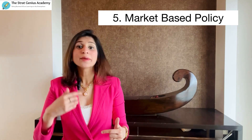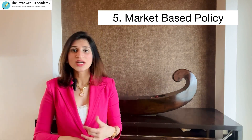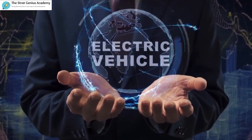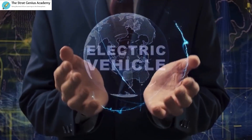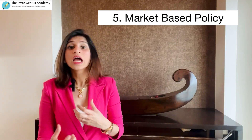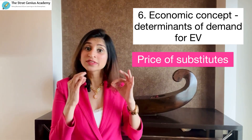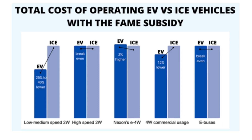Next, mention the market-based policies used by the government, such as conducting information, education, and communication programs — actively spreading awareness about EVs among consumers — and how that can also work to increase the quantity demanded. The last economic theory to mention is the determinants of demand for EVs. First, talk about the price of substitutes and show the price difference between the cost of an EV with the FAME policy and the cost of a conventional vehicle. Also mention the difference between the upfront price and the operating cost, and do an analysis of the price comparison taking both into account.